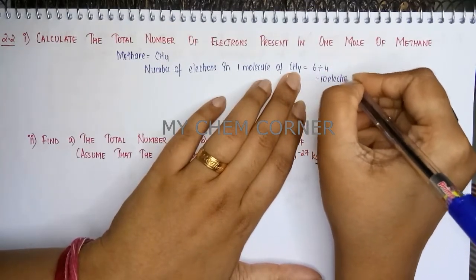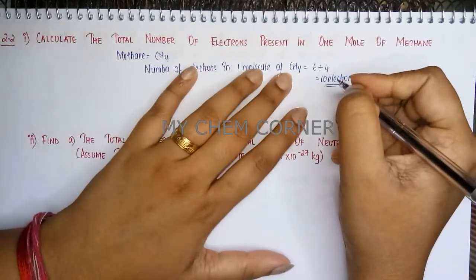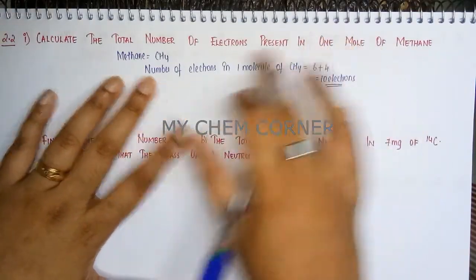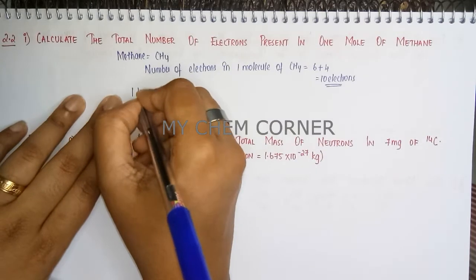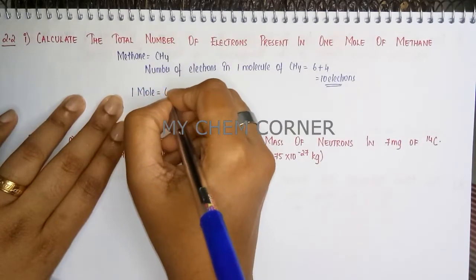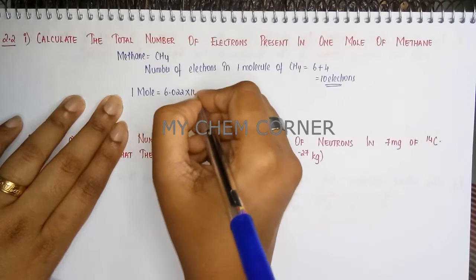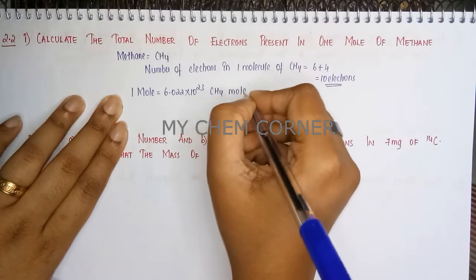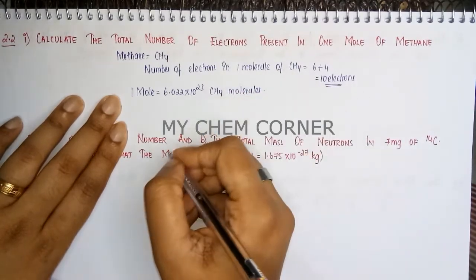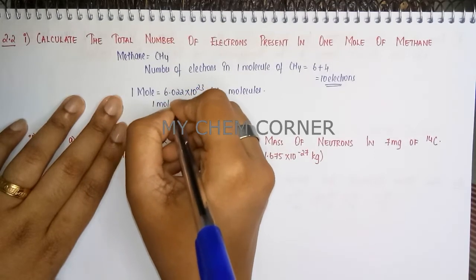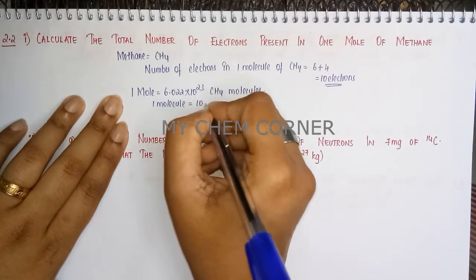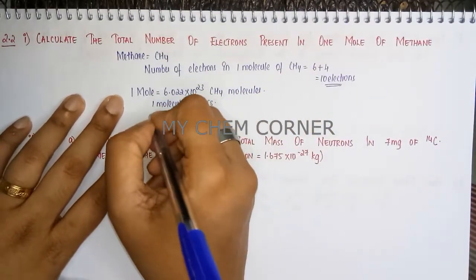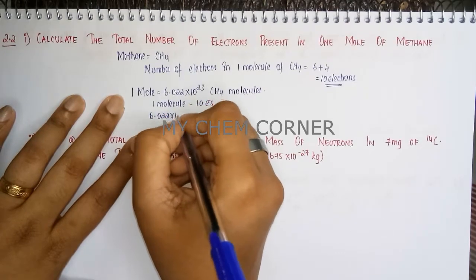Now, since we are talking about one mole, we use the relation: one mole equals Avogadro's number of methane molecules. We know that one molecule of methane contains 10 electrons, so for Avogadro's number of molecules we cross-multiply.